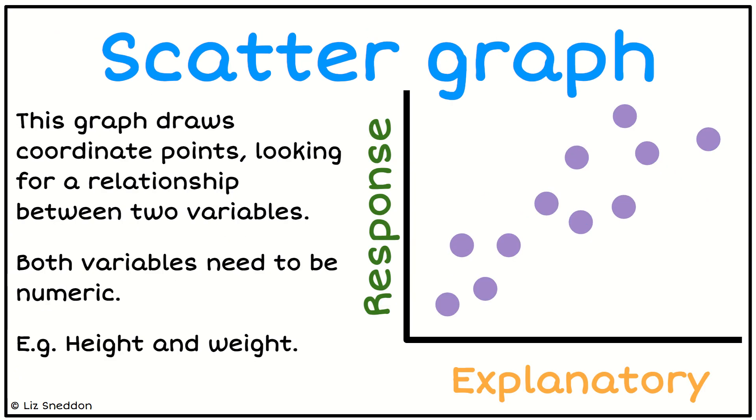We've got a scatter graph. A scatter graph has the explanatory variable on the horizontal axis and the response variable on the vertical axis, and it draws coordinate points. So if I had your height and your hand span, I would plot both of those as a single coordinate point. They have to both be numeric to be able to draw a scatter graph.